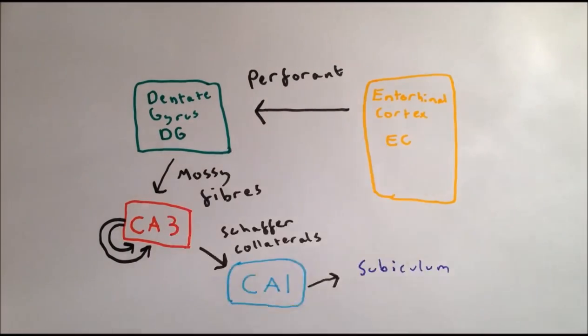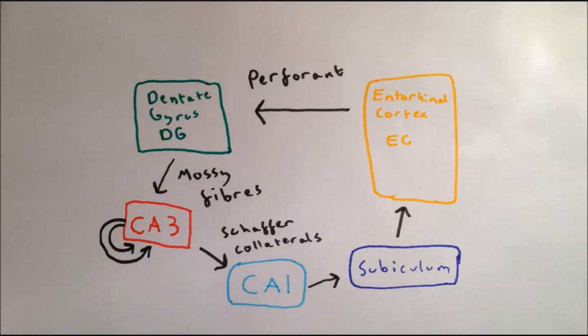The cells in CA1 then send their axons to the cells in the subiculum, and the cells in the subiculum complete the loop by sending their projections back to the entorhinal cortex.